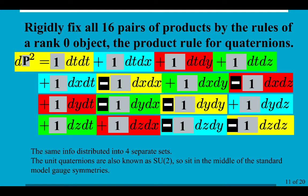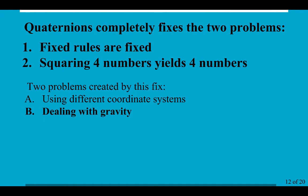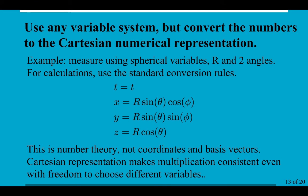So, it's important to think they are important because they're in the center of the standard model. Quaternions completely fix those two problems that the rules now are fixed. And squaring four numbers yields four numbers. That's great. But it also creates at least two problems. One is that people are used to using different coordinate systems and they still want to do so. And you have to deal with gravity. And gravity is about the metric changing depending on where you go, not that all the G factors of G are going to be the same, either one or minus one.